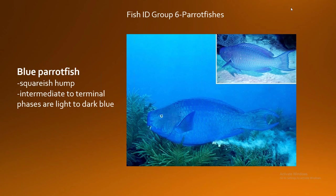Next up is the blue parrotfish — and can anyone guess why this one got its common name? Because it is blue. This one can grow to a similar size as the rainbow parrotfish, but its head is very well defined by an abrupt flattened hump. Its head is much more square-shaped and its mouth opening is far smaller compared to the rainbow parrotfish.